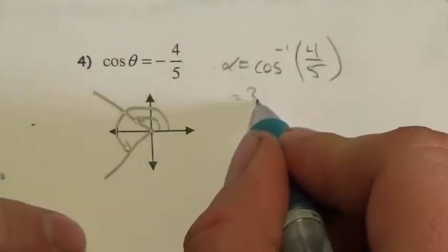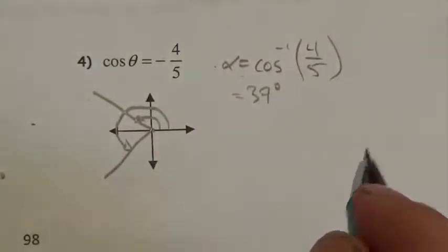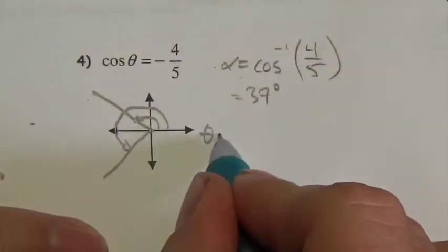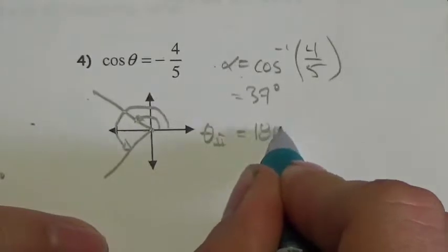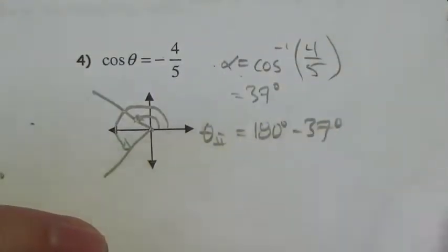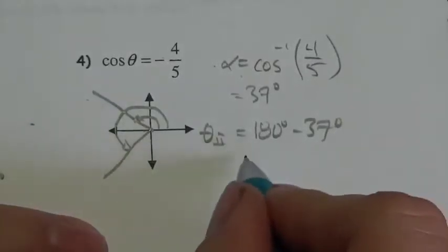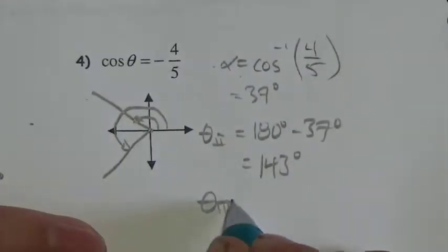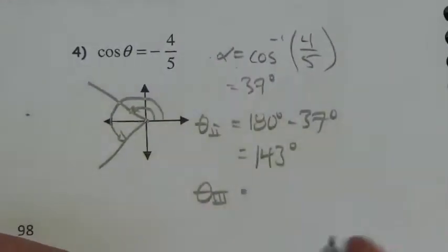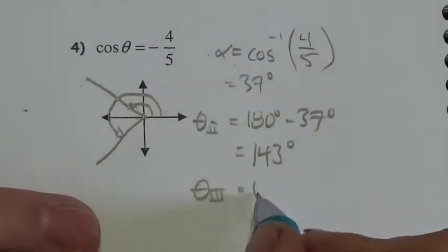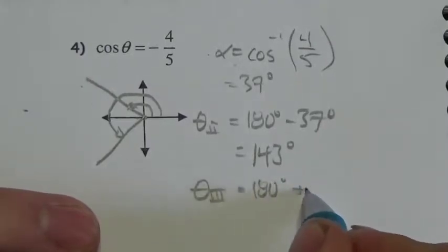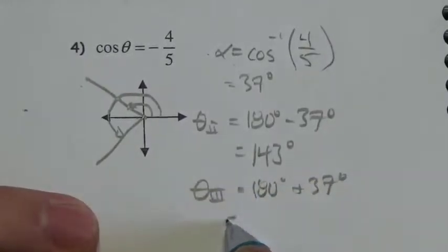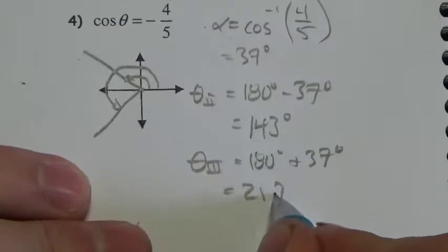The second quadrant angle will be 180 degrees minus 37 degrees, which gives 143 degrees. And then the third quadrant angle is going to be 180 degrees plus that 37 degrees, which gives 217 degrees.